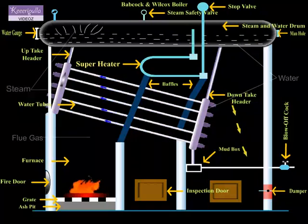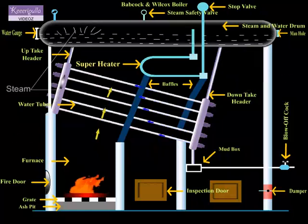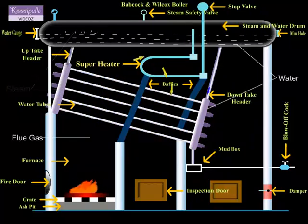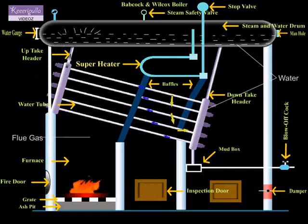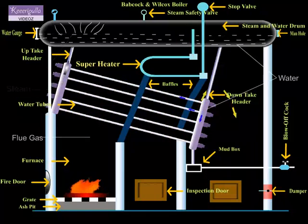Now we shall see the water circulation in the boiler. The water circulation in the boiler is indicated with blue arrows.